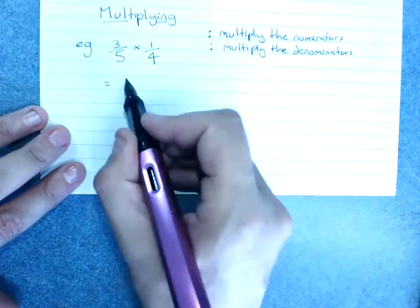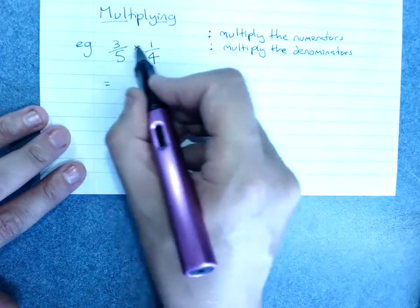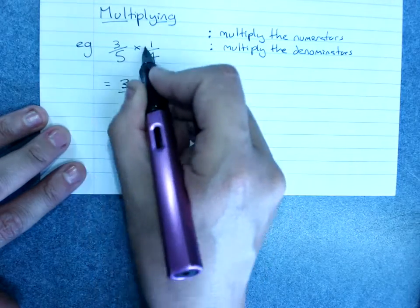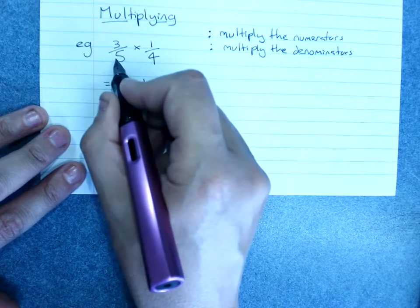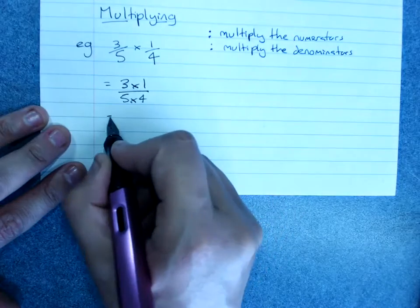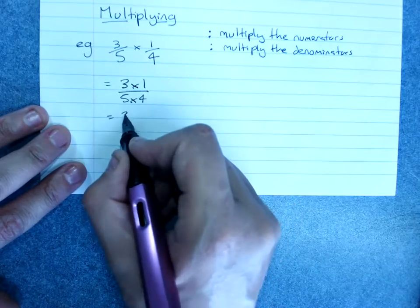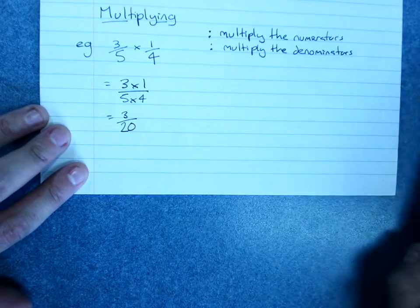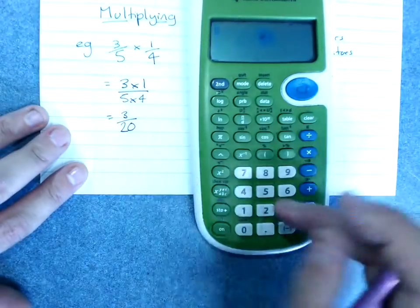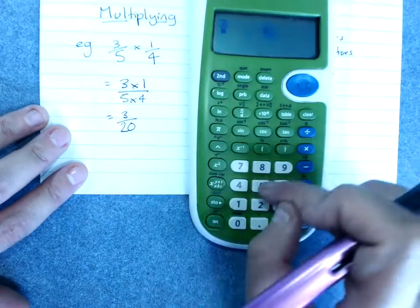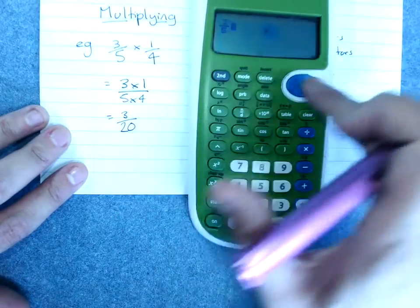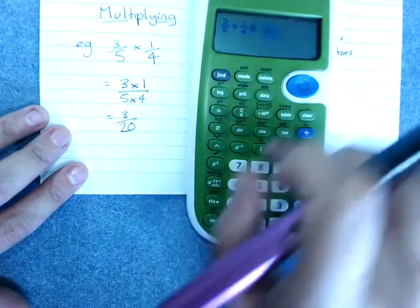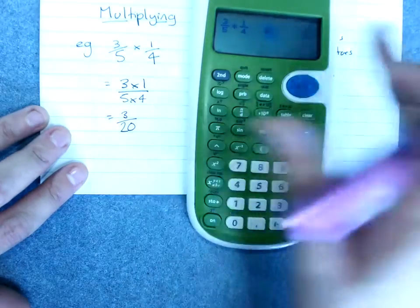When we need to show our working, it's a good idea to rewrite it with the numerators multiplied on the top of one fraction and the denominators multiplied on the bottom. And then it's as easy as doing 3 times 1 is 3, 5 times 4 is 20. To do it with a calculator, 3 over 5, hop out of the fraction, times 1 over 4, hop out of the fraction, equals 3 over 20.